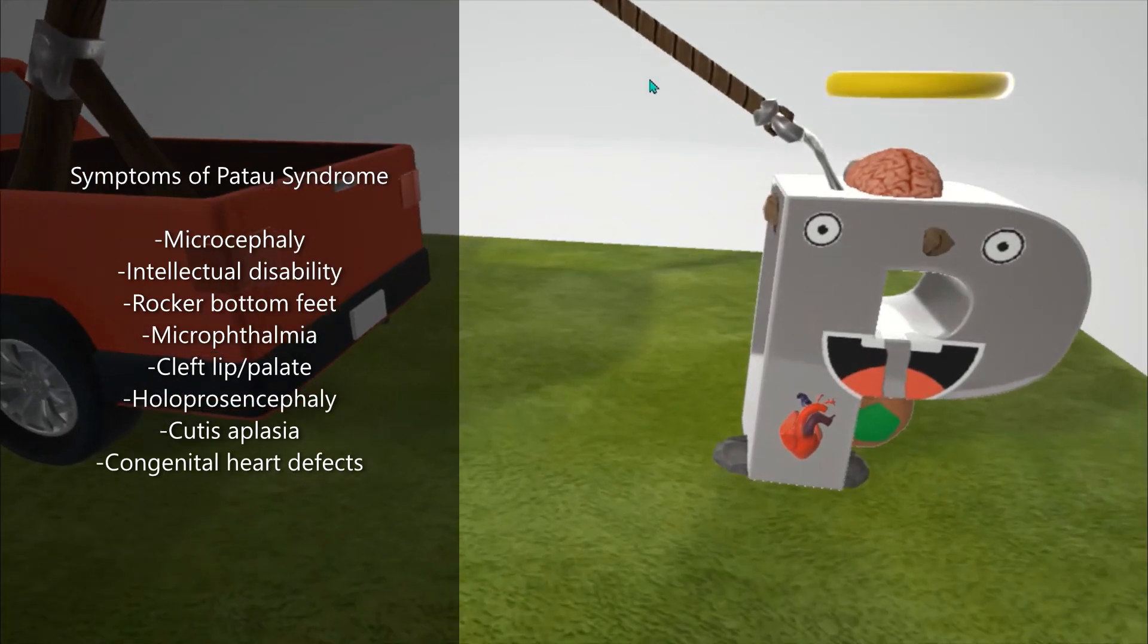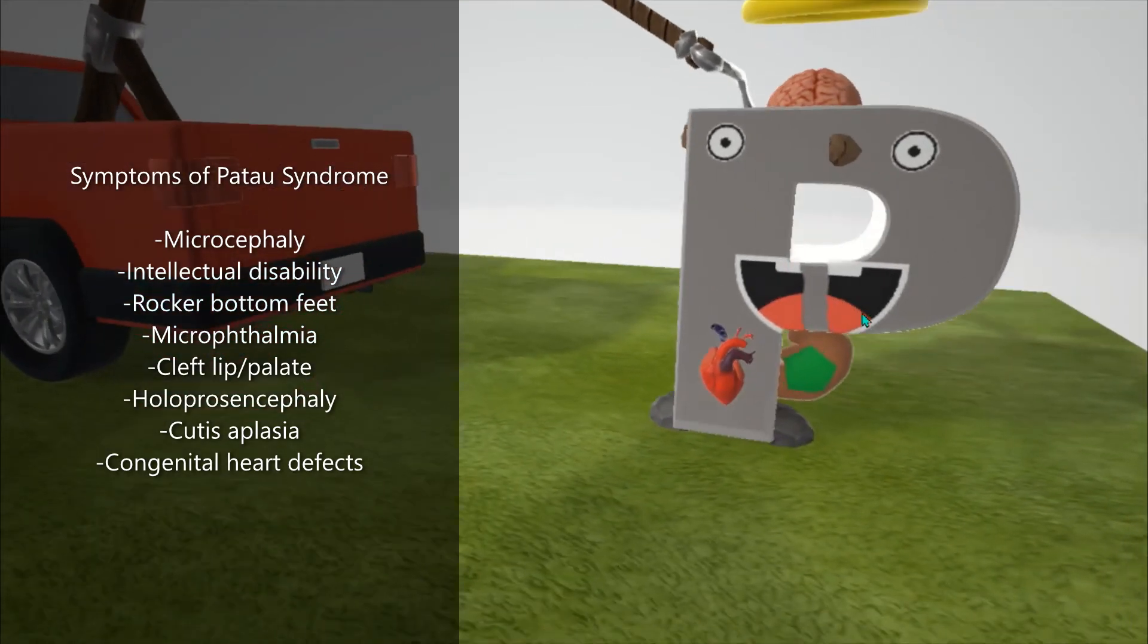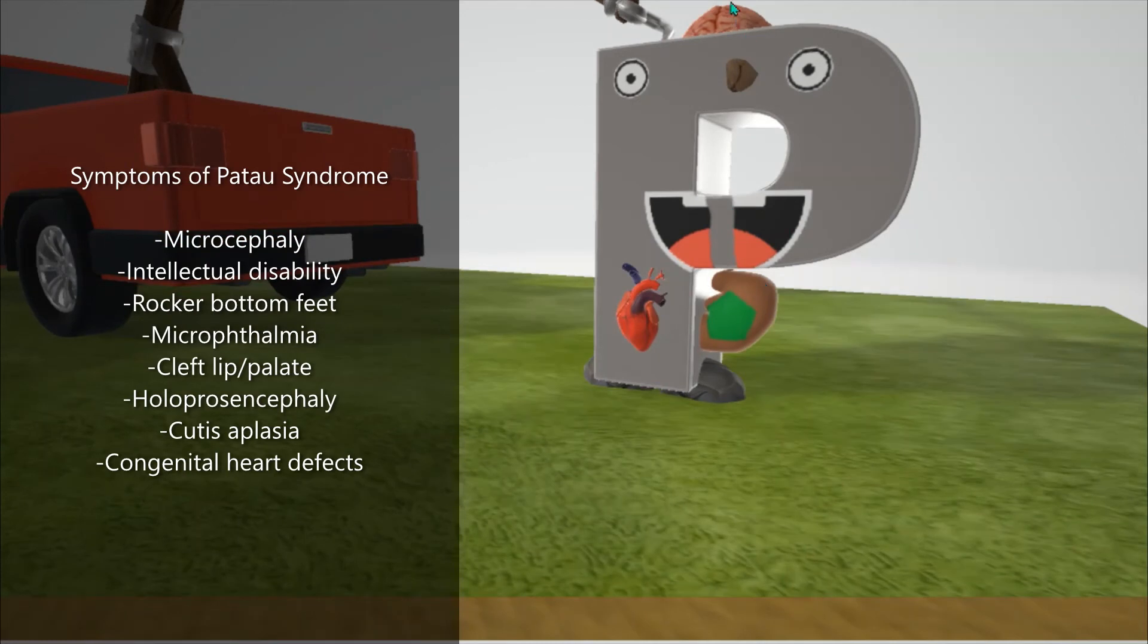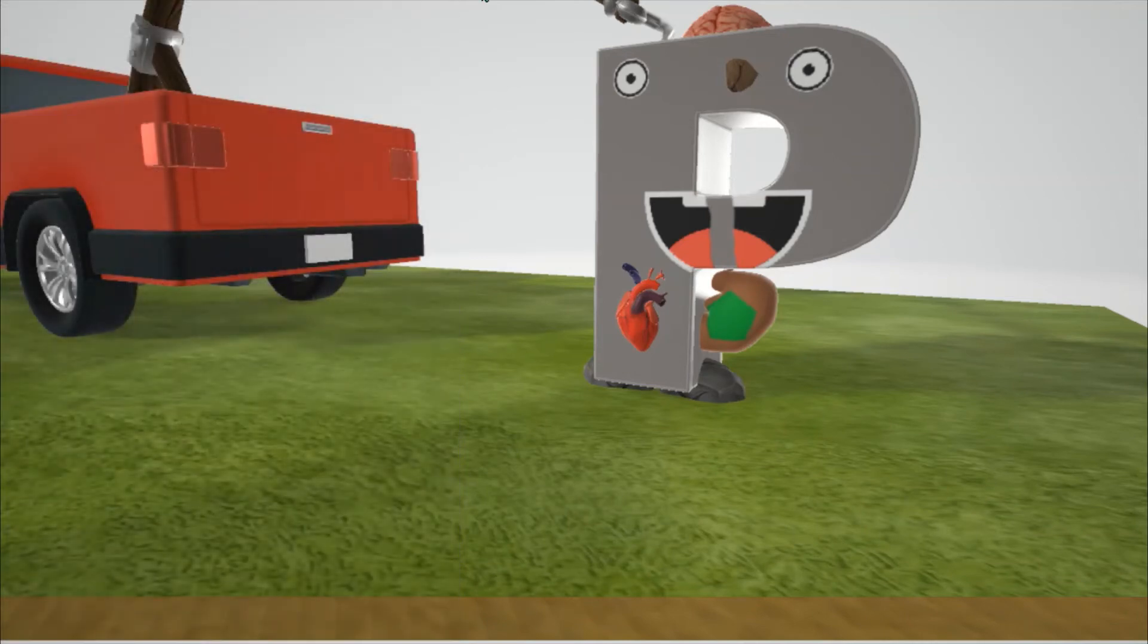He has his heart over here to help us remember the congenital heart problems. He has a very large kidney with a polygon on it—polygon on kidney, polygon for polycystic kidney disease. Polycystic kidney disease is another association in Patau syndrome.